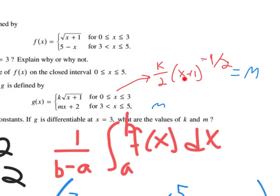At x equals 3. So if you plug 3 into this guy, 3 plus 1 is 4. 4 to the negative 1 half gives you 1 half, because 4 to the negative 1 half is the same thing as 1 over the square root of 4. The square root of 4 is 2. So K over 2 times 1 half gives you K over 4.